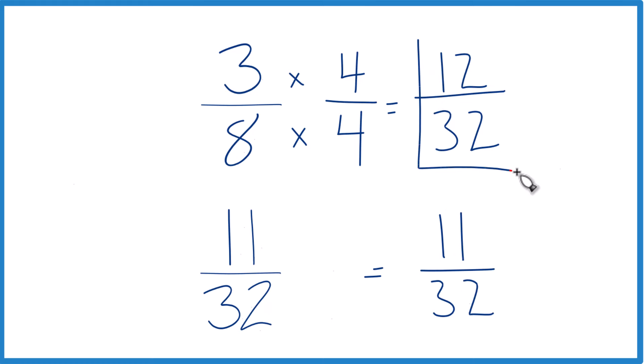Only by 1 32nd, still larger though. And that means that 3 8ths, that's a larger fraction than 11 32nds. So that's how you can do it.